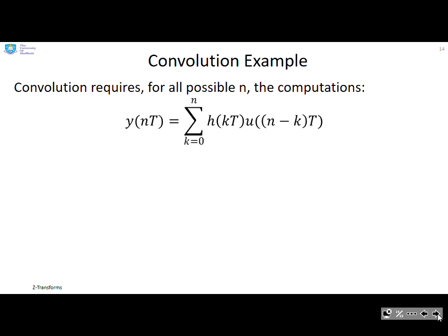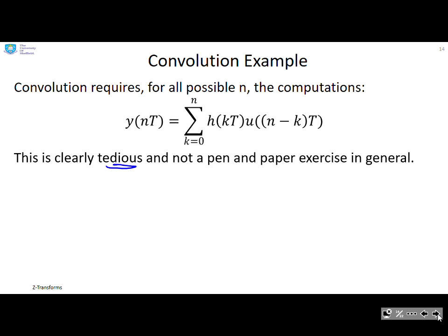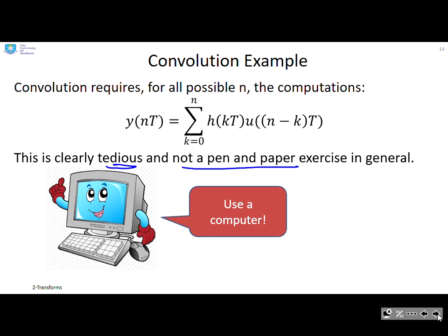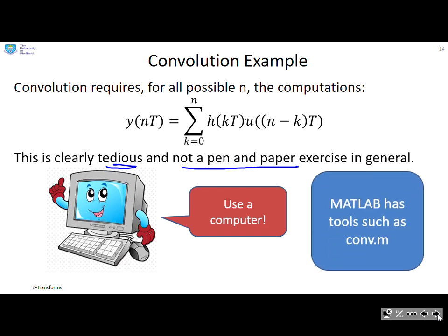An example. Convolution requires for all possible n, and that's the key point. I've only done a single n here, but you have to do this for all possible n, these summations. This is clearly tedious and not a pen and paper exercise in general. So use a computer. You can do some on pen and paper if you like, but rather you than me. MATLAB has got very convenient tools such as conv.m which do this very quickly and easily.